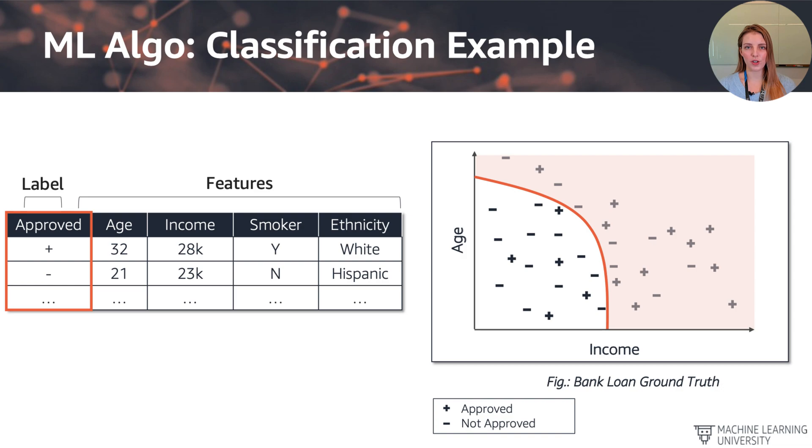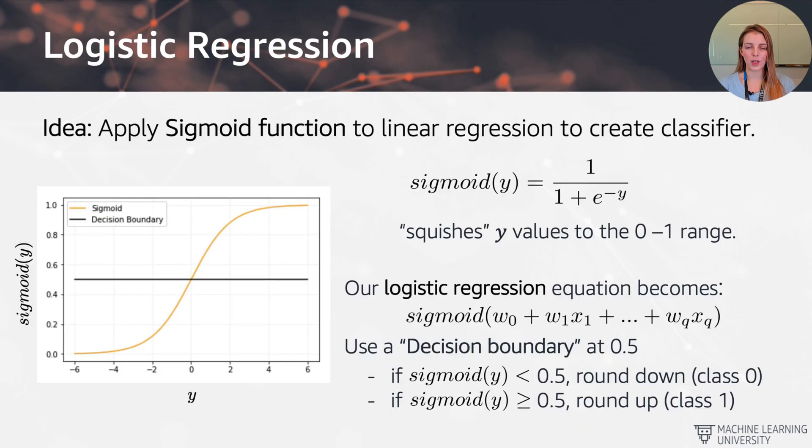So what does the cost function look like in the case of a classification example? Well, first we need to talk about the algorithm that we want to use in a bit more detail. So we only really know linear regression up to this point. And what I'm showing on this slide is a quick way to get from a linear regression, which is predicting a continuous numerical value, to a classifier.